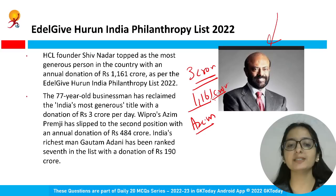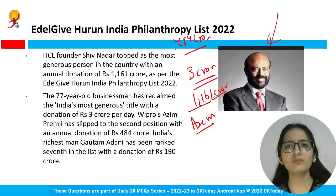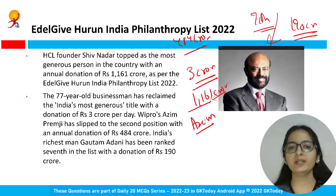At second place is Azim Premji of Wipro, with an annual donation of 484 crore rupees. You might wonder about the richest man Gautam Adani — his rank is seventh in the list, with a donation of 190 crore rupees.